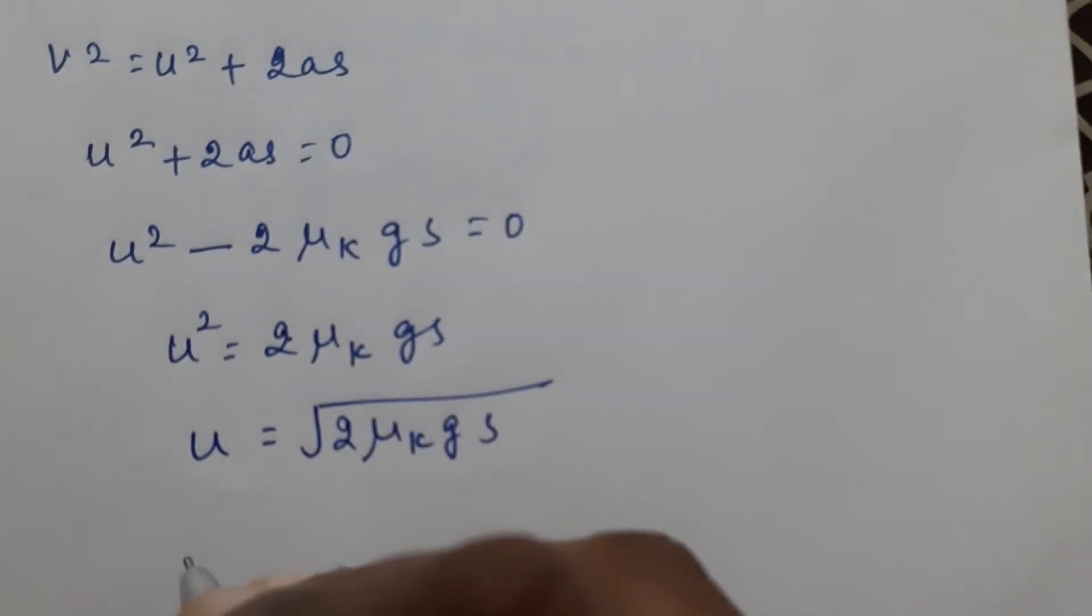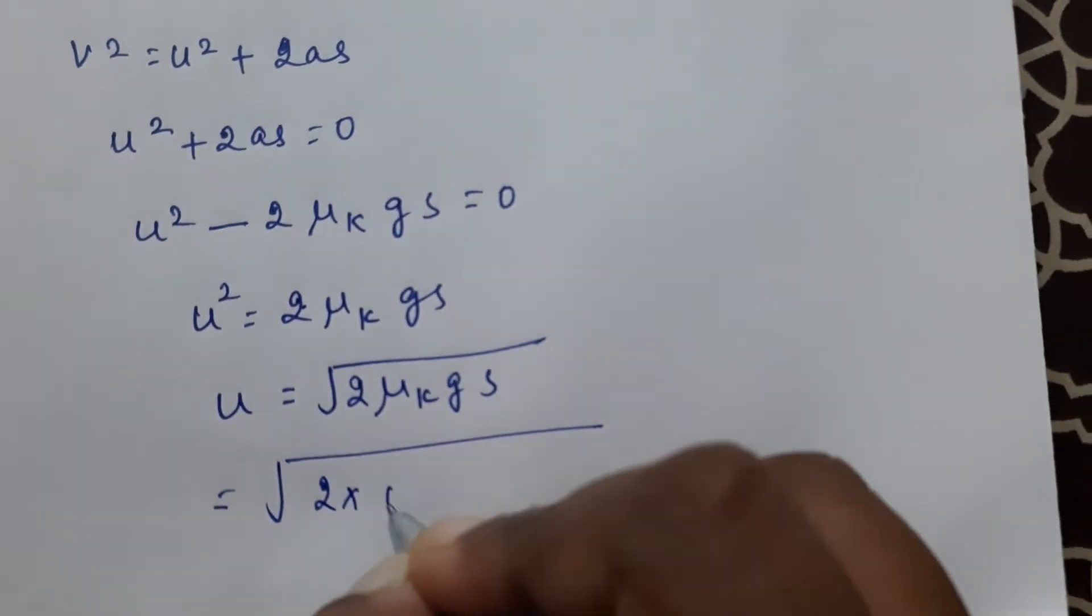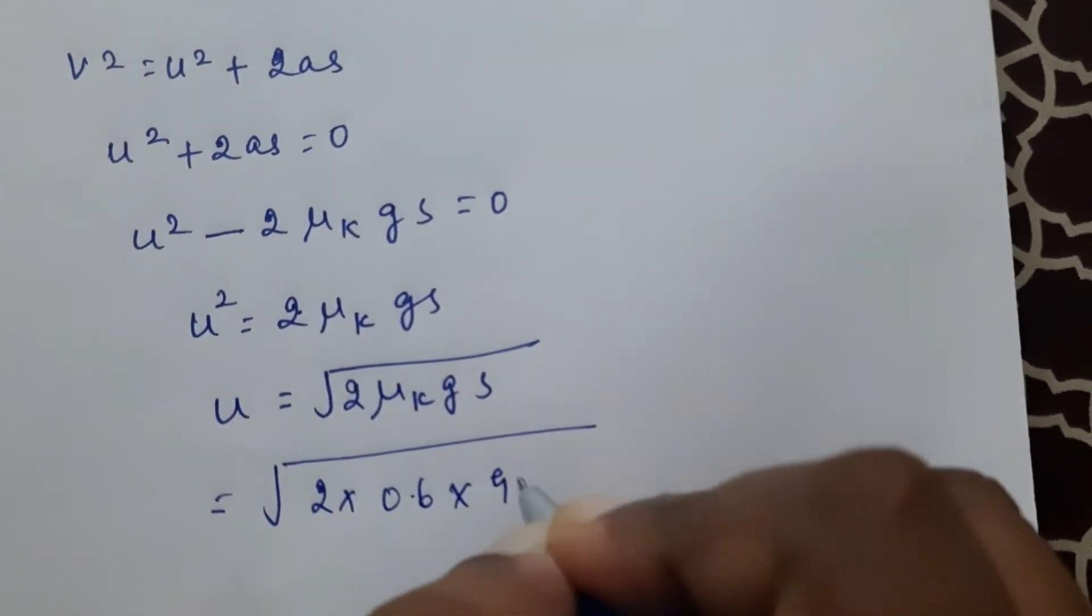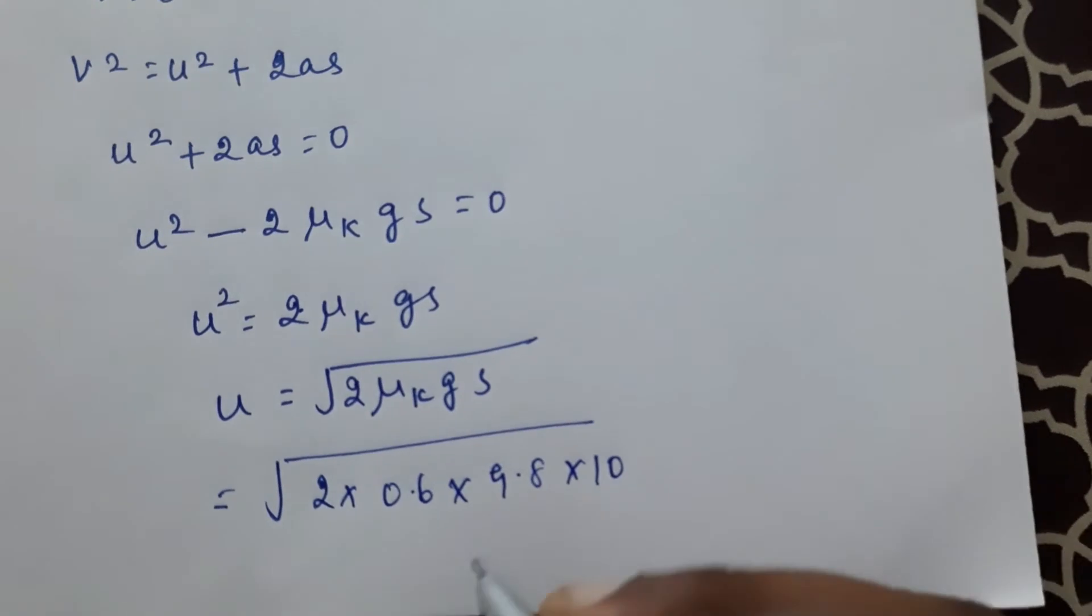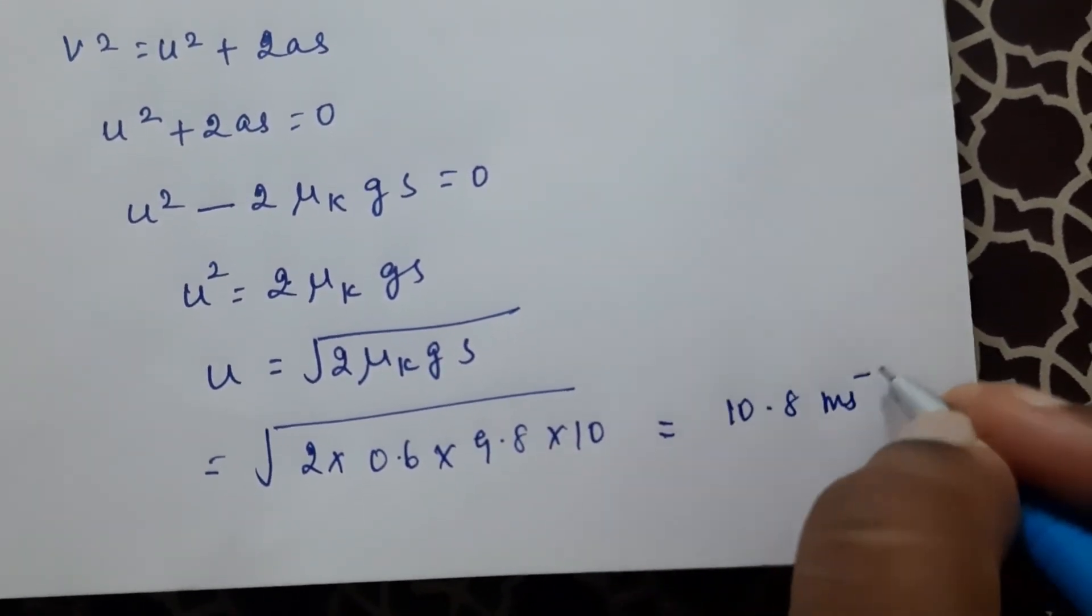So you can write here, this is root of 2 times 0.6 times 9.8 times 10. If you multiply and take root, you will be getting it as 10.8 meters per second.